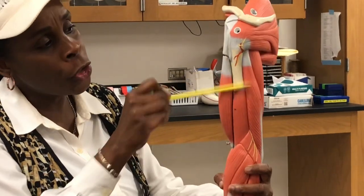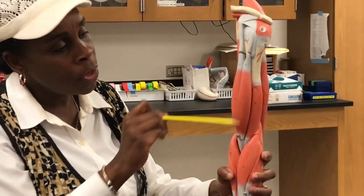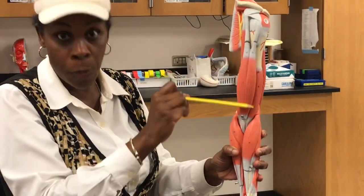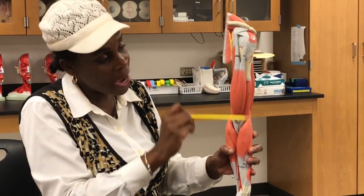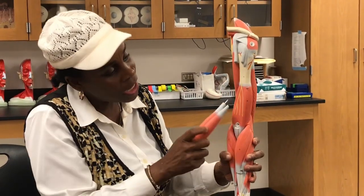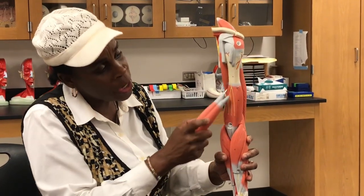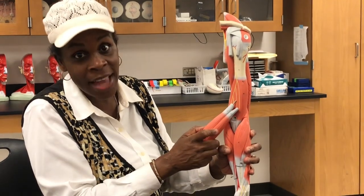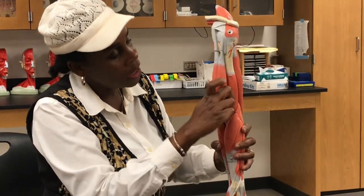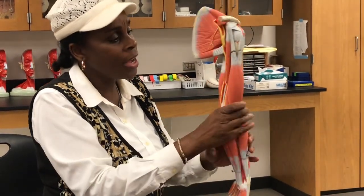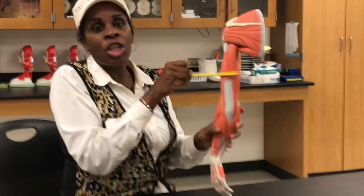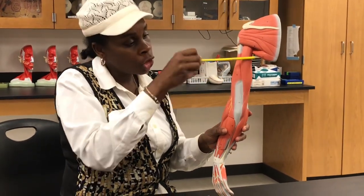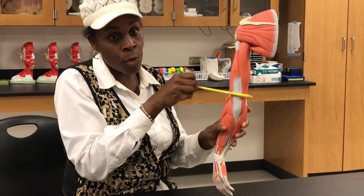When you look on the humerus in front, on the anterior compartment, we have the biceps brachii. And then under, we have the brachialis. And on the backside, the posterior compartment, we have the triceps brachii.